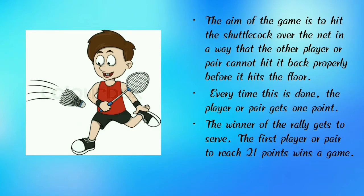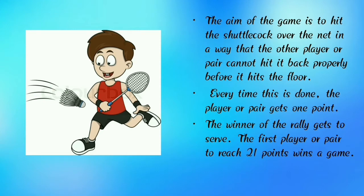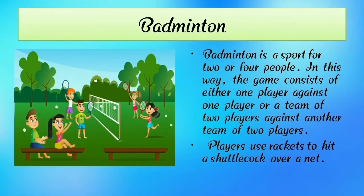The aim of the game is to hit a shuttlecock over the net in a way that the other player or pair cannot hit it back properly before it hits the floor. Every time this is done, the player or pair gets one point. The winner of the rally gets to serve. The first player or pair to reach 21 points wins the game.